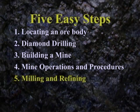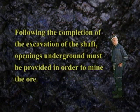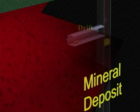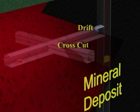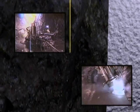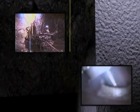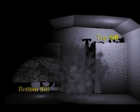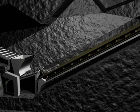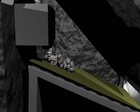Step 4: Mine Operations and Procedures. Following the completion of the excavation of the shaft, openings underground must be provided in order to mine the ore. This means that tunnels, called drifts and cross cuts, must be excavated from the shaft to gain access to the ore body. It is from these openings that holes are drilled through the ore body from one level down to the next, loaded with explosives, then blasted to do the initial breaking of the ore. The ore then drops by gravity through the ore passes to the crusher, which breaks the ore down to about a 6-inch dimension, which can be handled by conveyor belt and transported to bins and loading hoppers for hoisting to the surface.